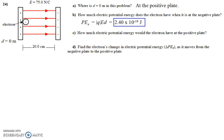What about potential energy at the positive plate? Well, we just established d equals zero at the positive plate, so of course it has no potential energy. It's exactly where it wants to be when it's up against the positive plate, like an object on the ground.